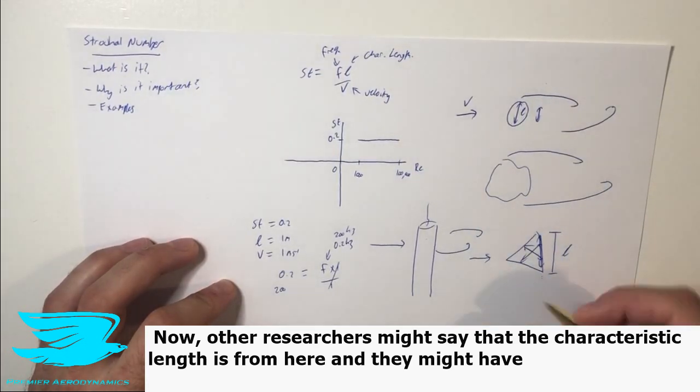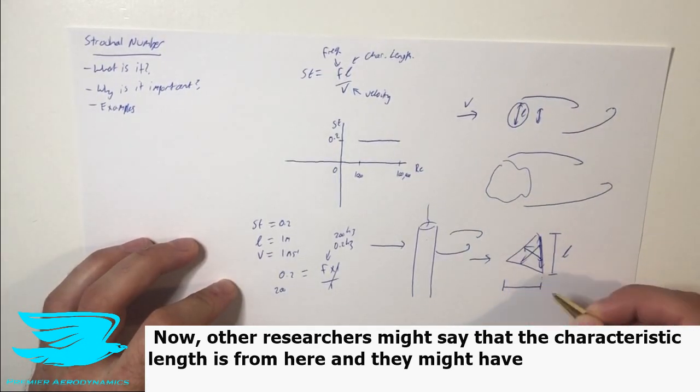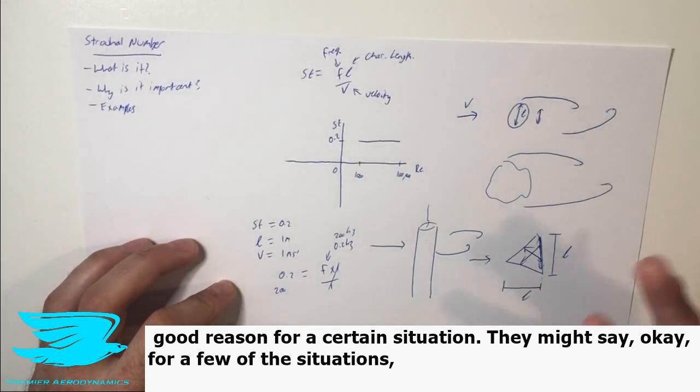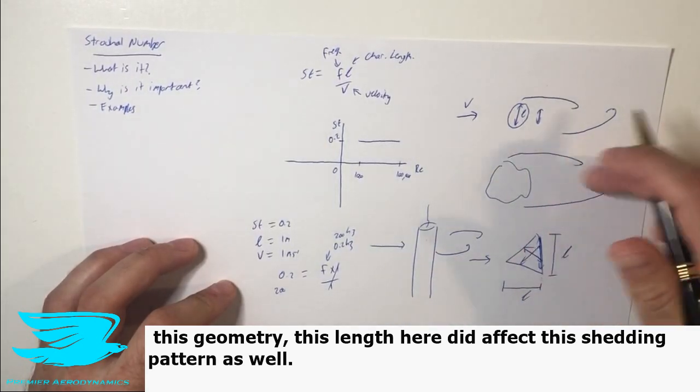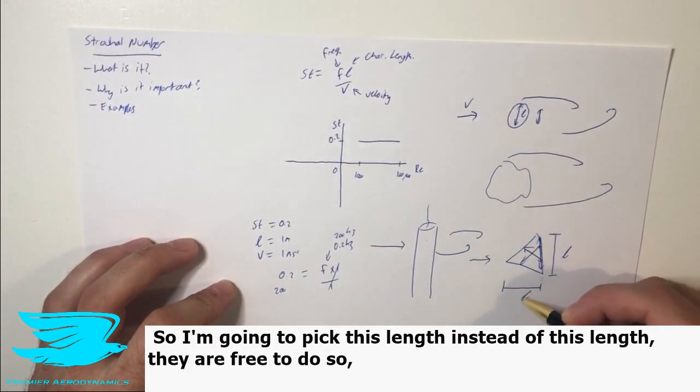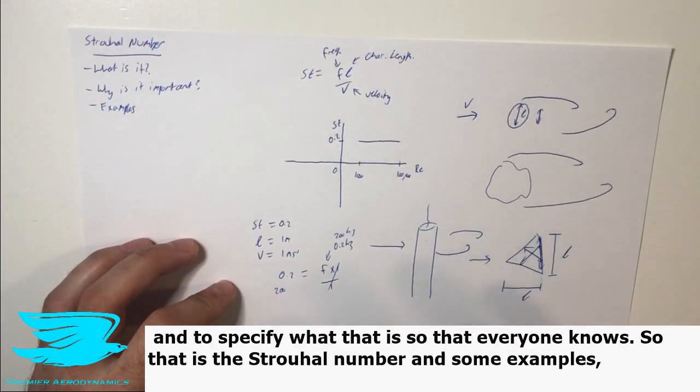Now, other researchers might say the characteristic length is from here to here, and they might have good reason for a certain situation. They might say, okay, for a particular situation, this geometry, this length here did affect this shedding pattern as well. So I'm going to pick this length instead of this length. They're free to do so. You're just going to specify what that is so that everyone knows.